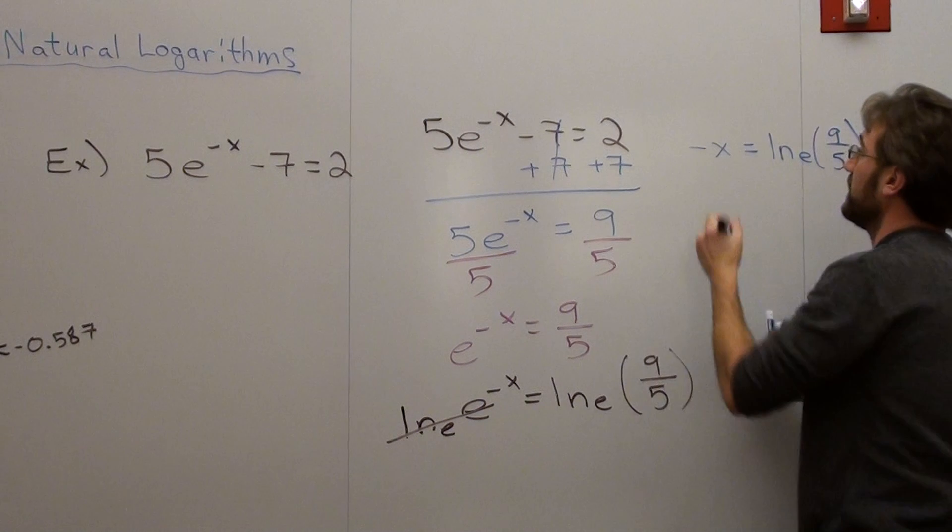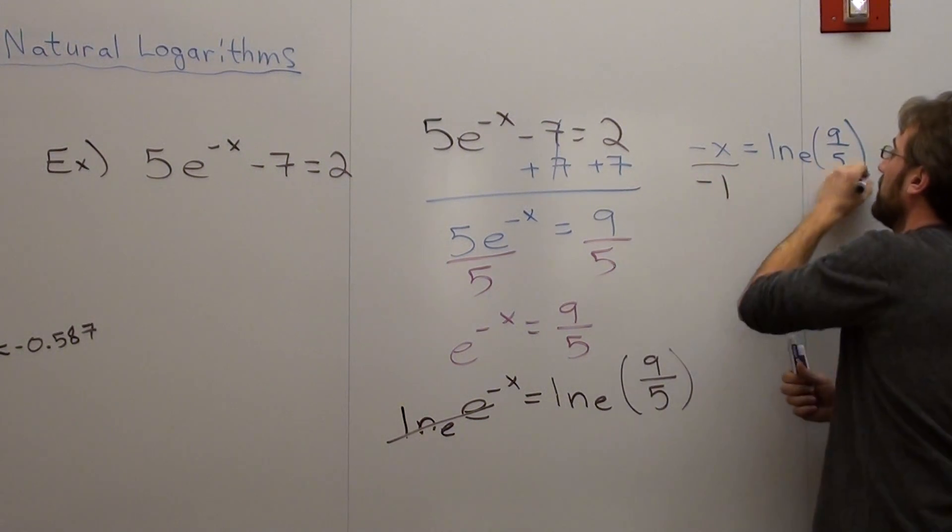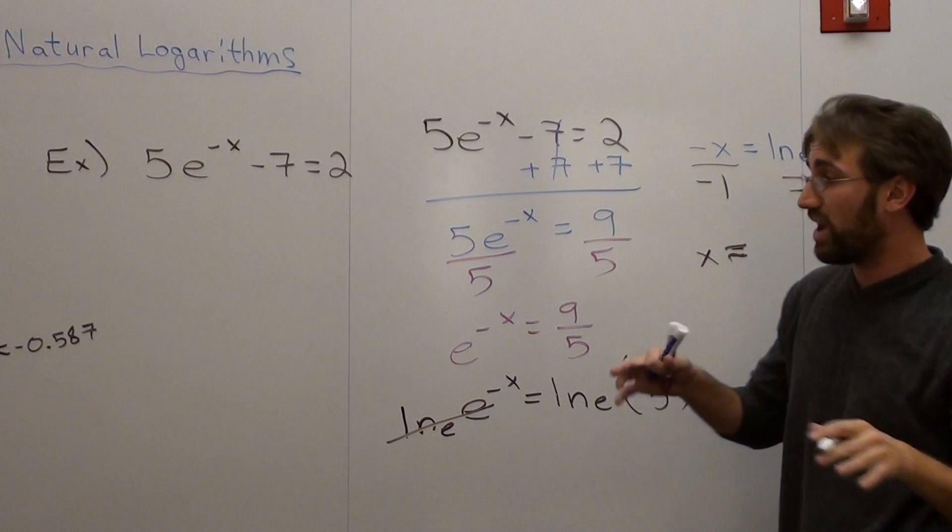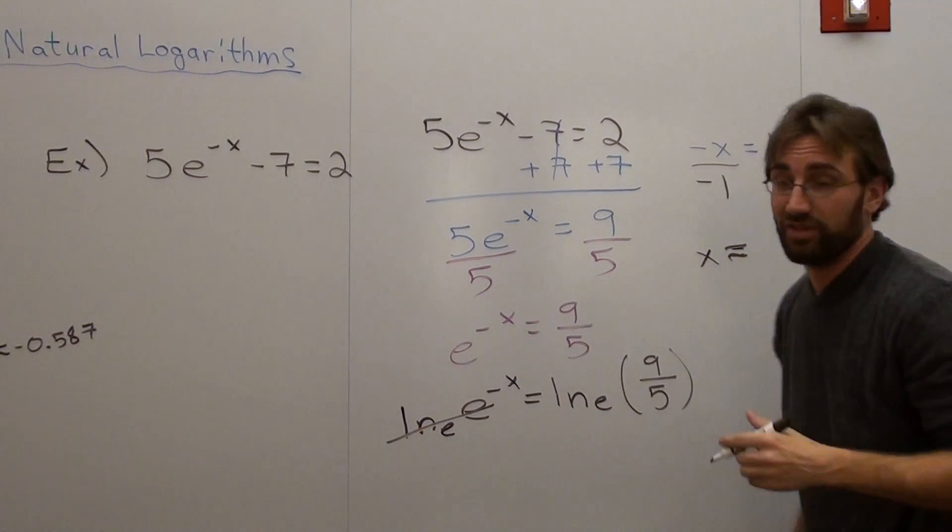Divide by negative 1 on both sides. And my x value is approximately negative 0.587.